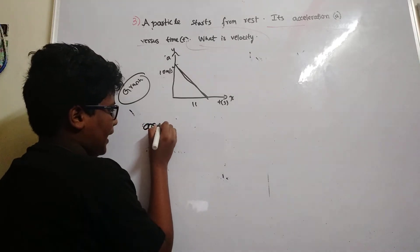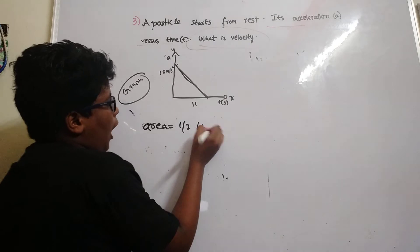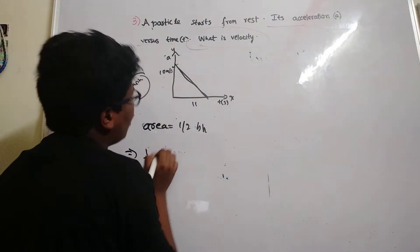What is the area of a triangle? Half times base times height. So half times base, how much?